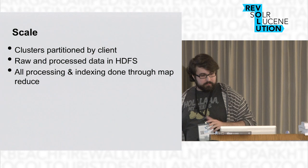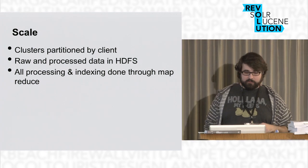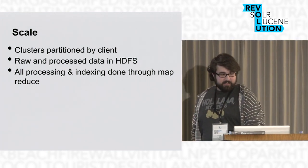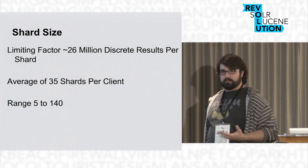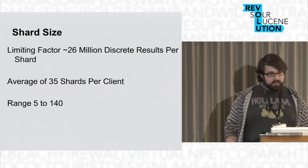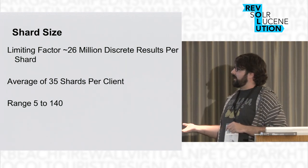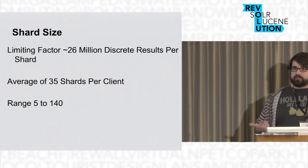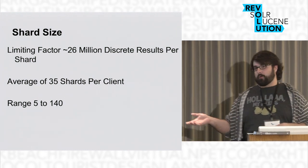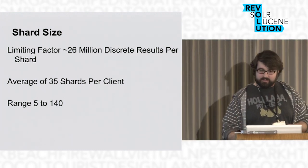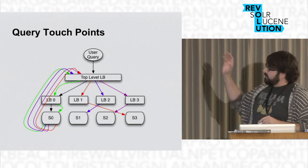Those 150 clients represent about 140 billion discrete results and 15 billion medical documents. We keep all that raw and processed data inside HDFS — about a petabyte raw and a petabyte and a half processed. Working out the shard size, our real limiting factor was about 26 million discrete results per shard with all the facets, which works out to about 35 shards per client.